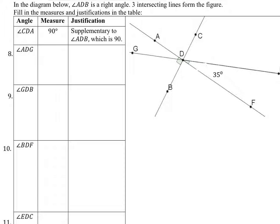In the diagram, angle ADB is a right angle and it has been marked. Three intersecting lines intersecting at D form the figure. Fill in the measures and justify in the table.